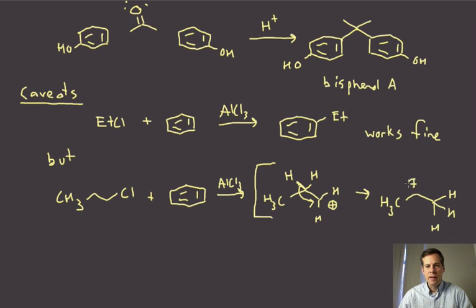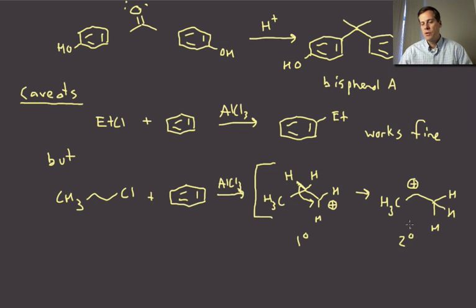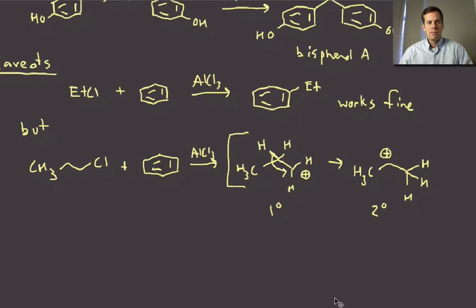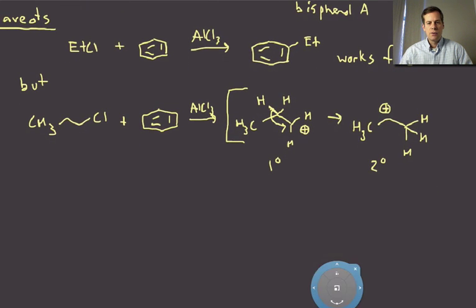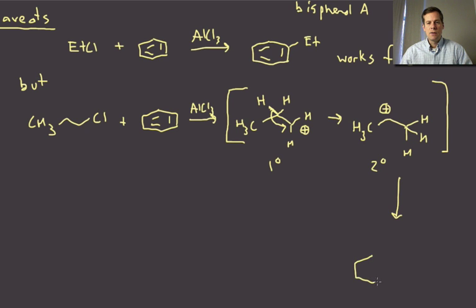And that rearrangement will then give you this intermediate okay where we now have a secondary carbocation right so this was primary this is now secondary and much more stable as a cation. Okay and so that is a problem if we were trying to add n-propyl chloride or n-propyl to the benzene ring we're actually not going to end up adding that what we'll end up with after we react with the benzene is isopropyl substituted.